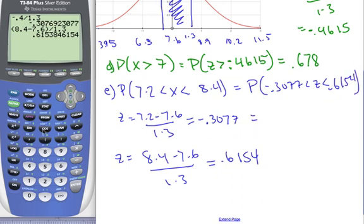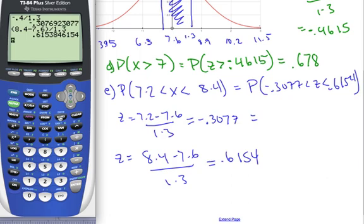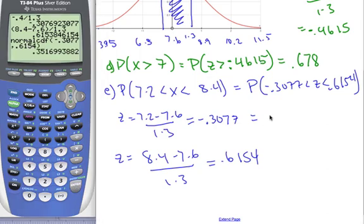I'm using my normal CDF now. I go normal CDF 2. I'm going to go from negative 0.3077 to 0.6154. And this is equal to 0.351. There's my probability for E.